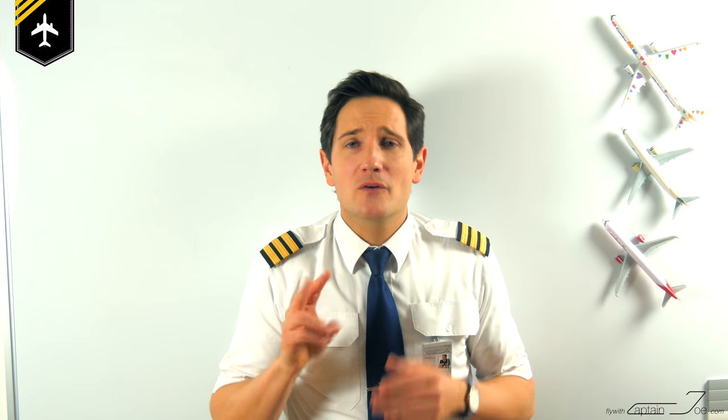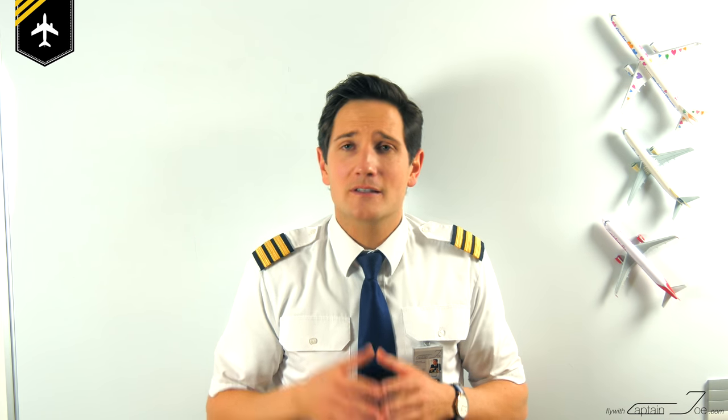The Airbus A320 family is equipped with two radio altimeters — one for the captain's primary flight display and another for the co-pilot side. In case one radio altimeter fails, both flight displays will indicate the height of the remaining one, but the aircraft would be reduced in its landing capability down to CAT2, which would make an automatic landing not possible. More about Autoland and ILS categories in future videos.